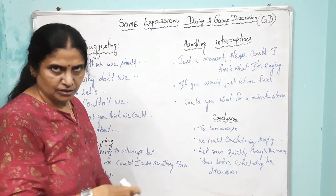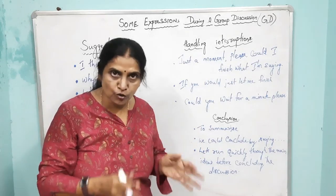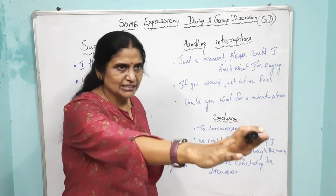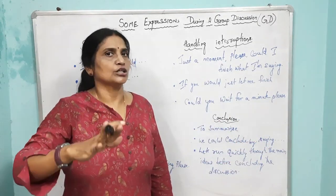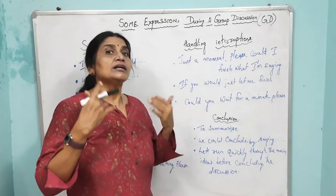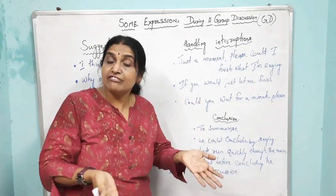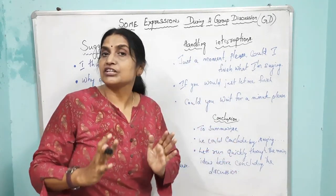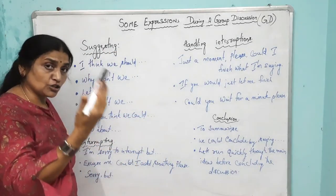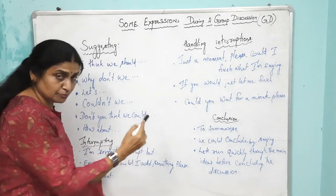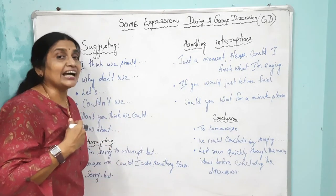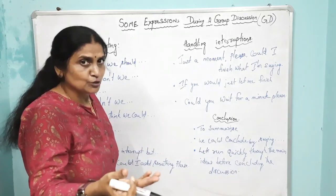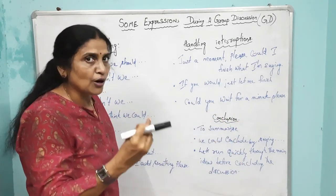Suppose you want to interrupt someone who is talking. You cannot say 'wait a minute, I wanted to say something.' People are observing you — they are evaluating your cooperation, skills, knowledge, behavior, and body language. So, if you want to interrupt, you say: 'I am sorry to interrupt, but I have this point,' or 'Excuse me, could I add something please?' or 'Sorry, but I have to tell you this.'